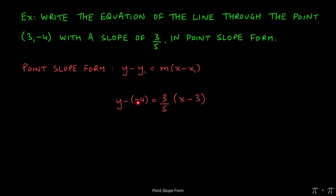Now a negative times a negative yields a positive, so we can rewrite this as y plus 4 equals 3 fifths, times x minus 3.